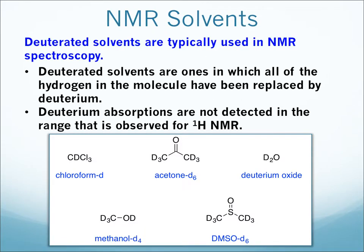First let's look at the NMR solvent. For NMR, deuterated solvents are typically used. A deuterated solvent is one where all the hydrogens in the molecule have been replaced by deuterium. The reason for that is because deuterium absorptions aren't detected in the range we use for proton NMR — that 0 to 12 range — deuterium doesn't show up.